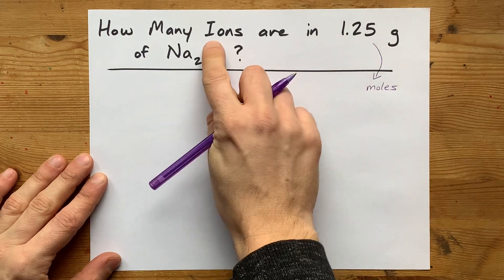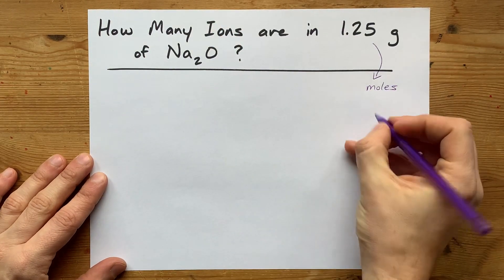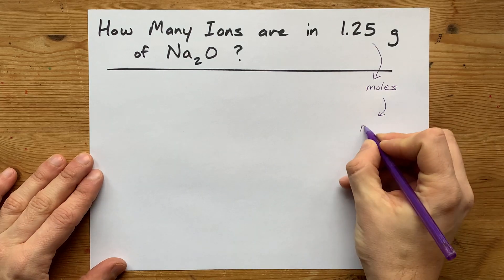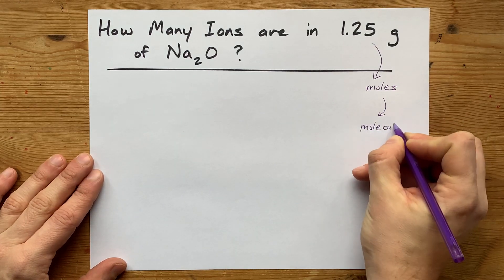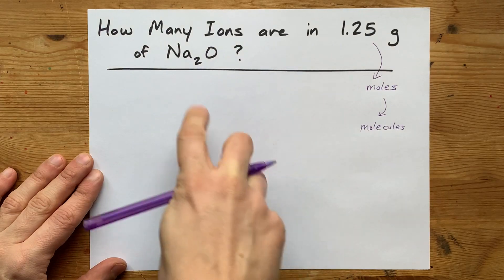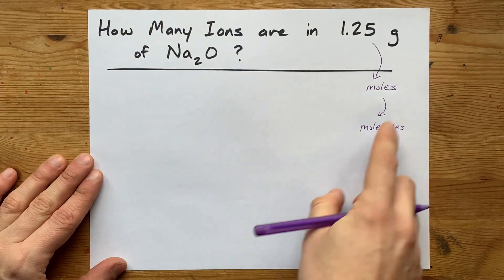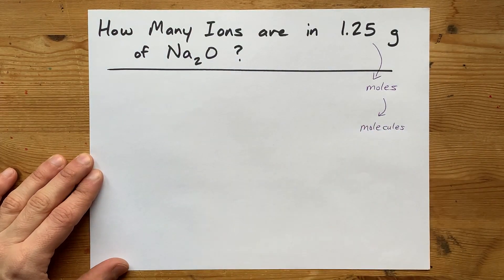Because we're actually asked for the particles themselves, we're going to have to convert moles to the number of molecules, which in this case is actually formula units because it's an ionic compound. But the word molecules gets the point across.